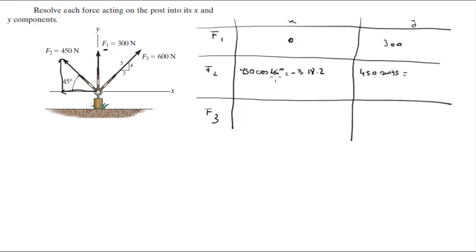450 cosine of 45 is 318.2 but it's negative because it's going towards the negative X axis and this one's positive, 318.2, because it's going towards the positive Y axis.